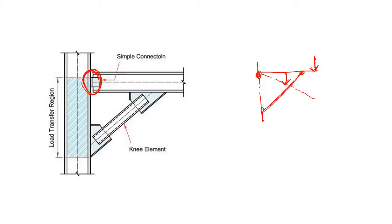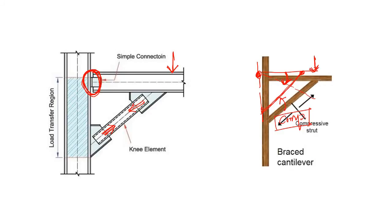This rotation is resisted by the external member. Since the applied load tries to rotate the cantilever clockwise, this support member is actually under compressive force. This type of support system is known as a braced cantilever — the pin joint is here, and this external member stabilizes it.